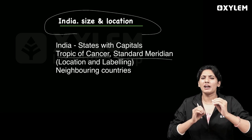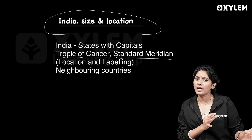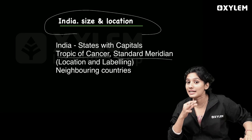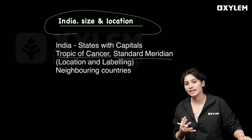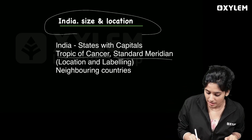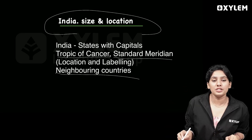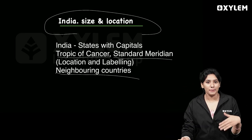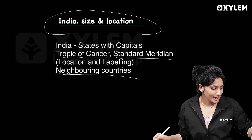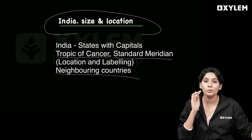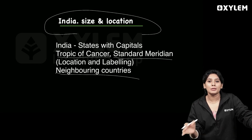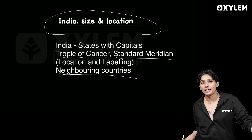In the map, India's neighboring countries — not states, countries — Pakistan, China, Afghanistan, and Bangladesh. We are going to study the boundaries shared with these neighboring countries.